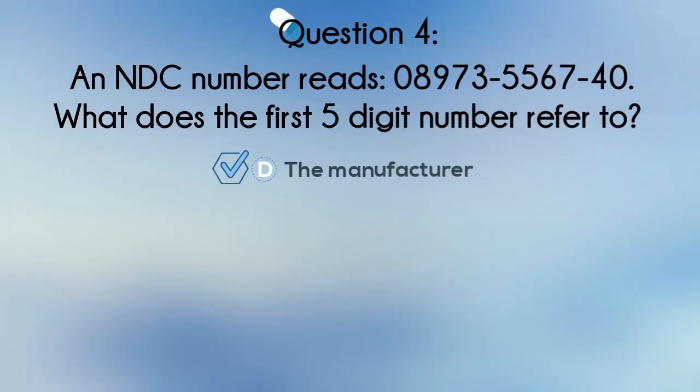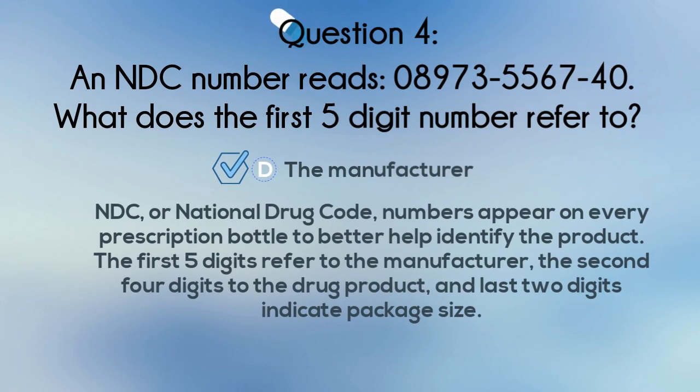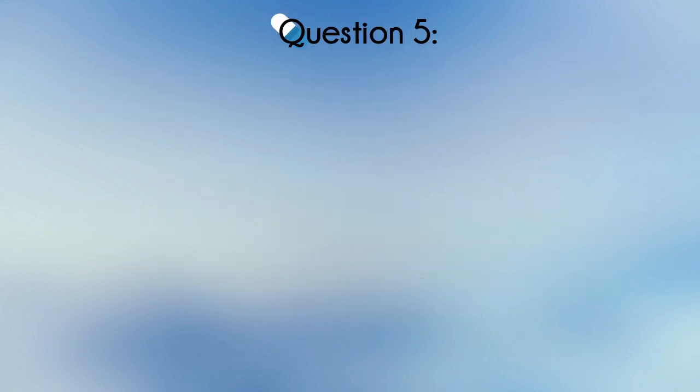The correct answer is D: the manufacturer. NDC, or National Drug Code, numbers appear on every prescription bottle to better help identify the product. The first five digits refer to the manufacturer, the second four digits to the drug product, and the last two digits indicate package size.